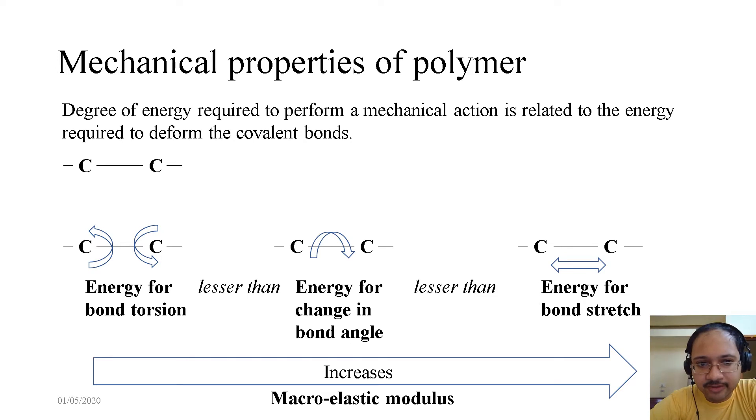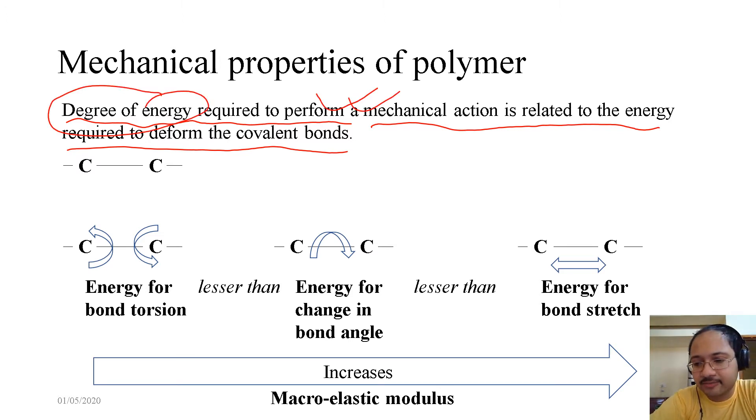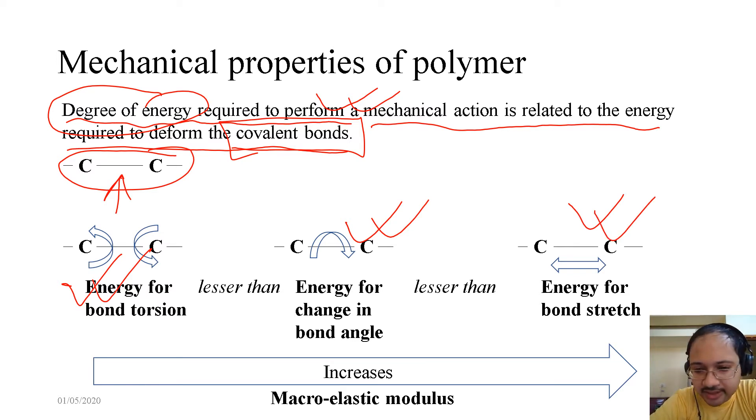Now coming to mechanical properties of polymer. Degree of energy required to perform a mechanical action is related to the energy required to deform the covalent bonds. When we are talking about covalent bonds, we mean this carbon-carbon bond. There can be some energy needed to twist the bond, some energy needed to bend the bond, some energy needed to stretch the bond. The energy for bond torsion is less than the energy for change in bond angle, which is again less than energy for bond stretch. That means you need the maximum energy to stretch the bond. Or in other words, the macro elastic modulus will be the maximum in this case.